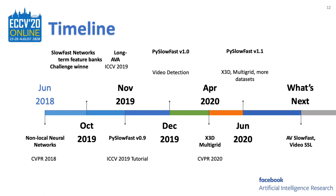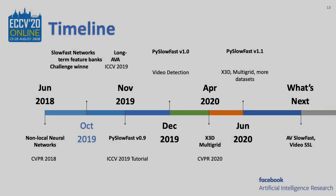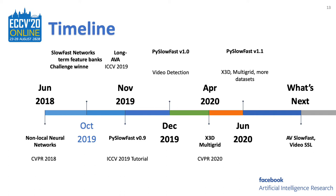It all starts from 2018, where the team had a paper called Non-Local Neural Networks, which introduced non-local operations as a generic family of building blocks for capturing long-range dependencies. After that, moving to October 2019, we introduced SlowFast Networks — a two-pathway network with a slow pathway to capture spatial semantics and a fast pathway to capture motion at fine temporal resolution. That work won the AVA challenge on the track of spatial-temporal action localization at CVPR 2019.